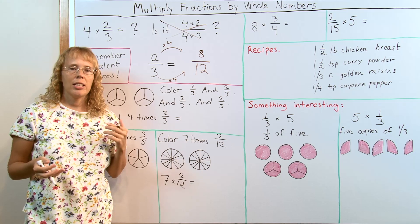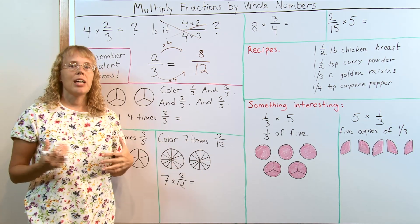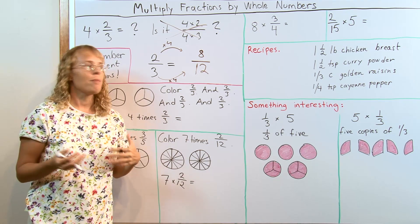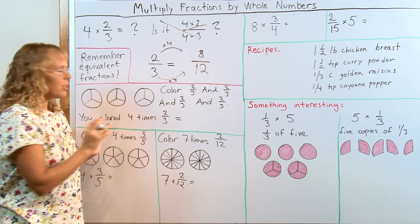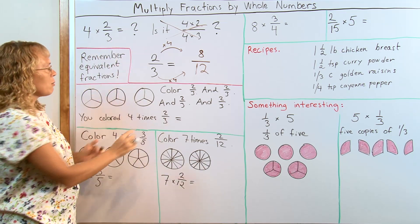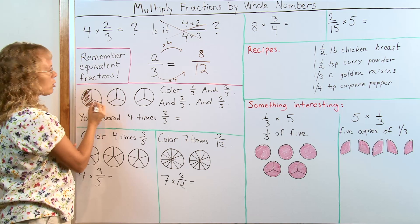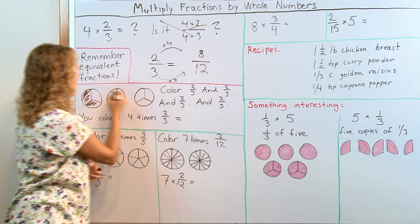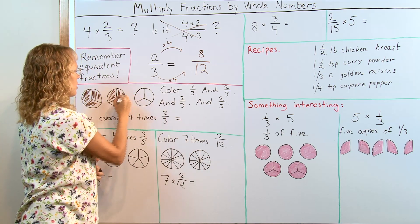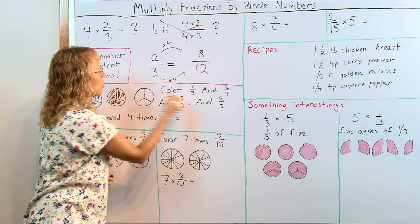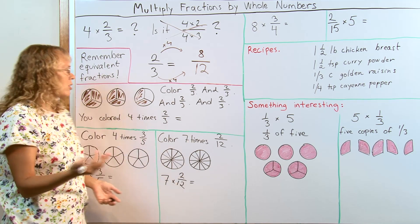To find out how it is done, students can actually discover this themselves. You don't need to give them the rule. For example, if we need to find 4 times 2 thirds, we could color 2 thirds, and then repeat this process 4 times: another 2 thirds, I color this third and this third, another 2 thirds, and then lastly one more 2 thirds. So I've colored 4 times 2 thirds.